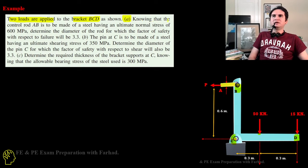Part A: knowing the control rod, this is our control rod in the yellowish area over here, is made of steel with an ultimate normal stress of 600 MPa, we want to determine the diameter of our control rod if the factor of safety with respect to failure is 3.3.